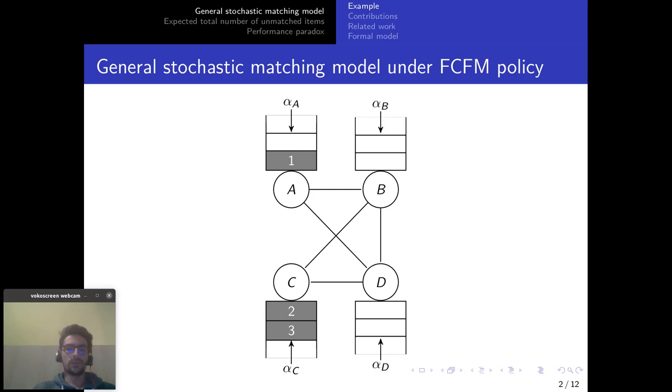Matching in graph theory because we are going to consider a compatibility graph with nodes and edges and we want to perform a matching on that graph. This means taking pairs of adjacent nodes such that there is no two pairs that share a node in common.